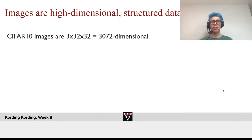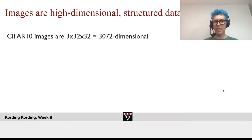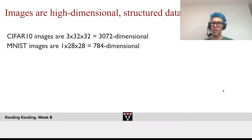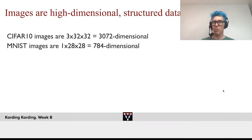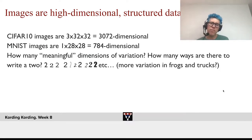Images are high-dimensional structured data. CIFAR-10 images are color, so it's 3 times 32 times 32 channels — about 3,000-dimensional. MNIST images, which you might remember from previous approaches, are 784-dimensional. Let's think a little bit about meaningful dimensions of variation.